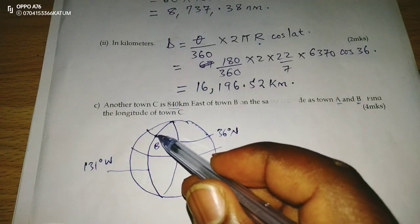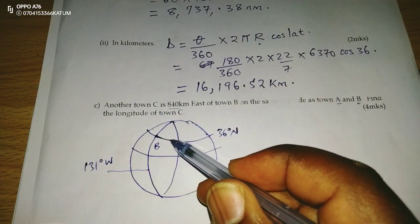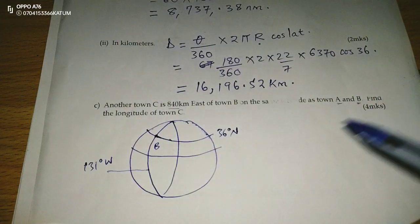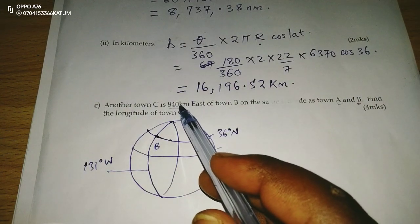which means from B, we will move to the east. I don't know up to where, but along that latitude, a distance of 840.